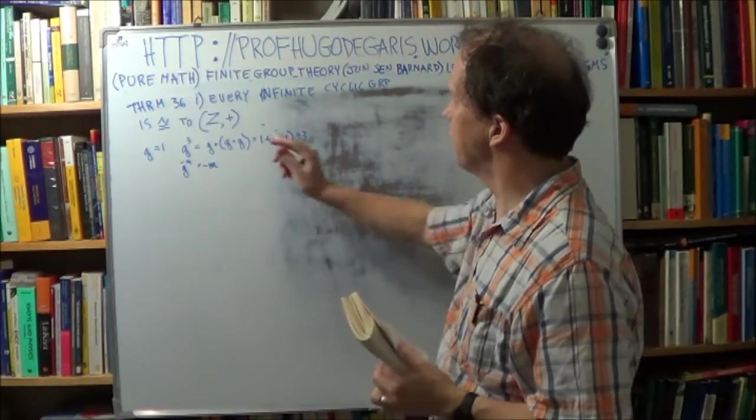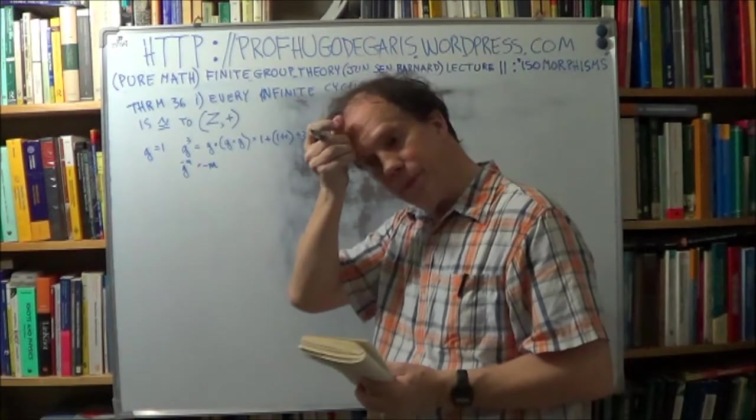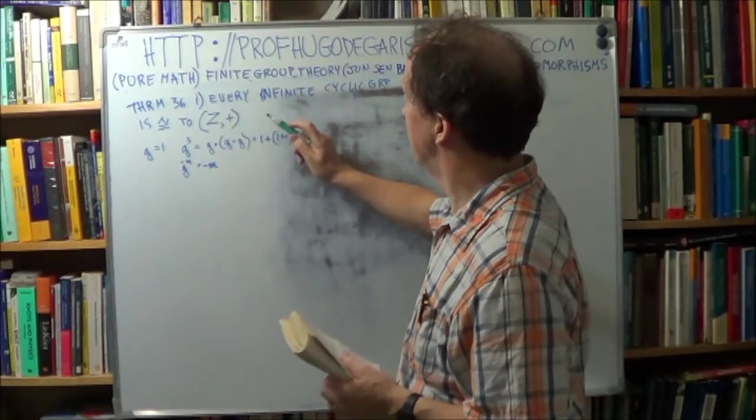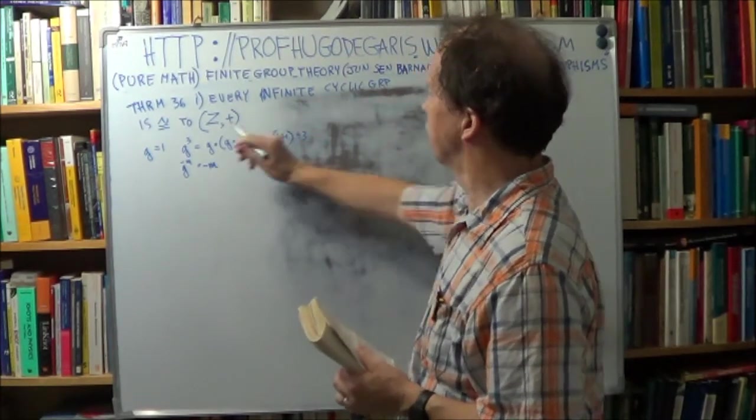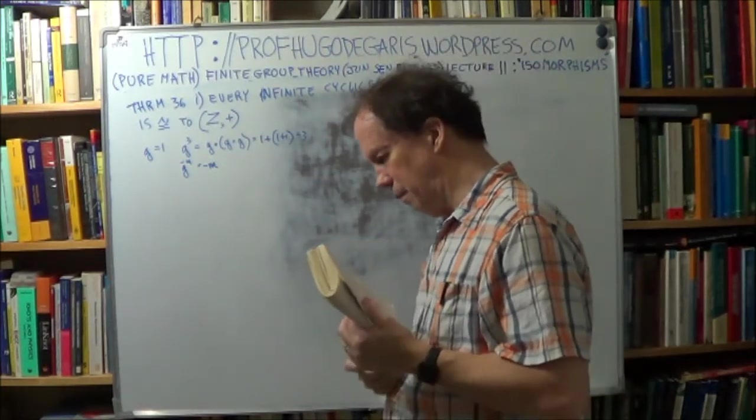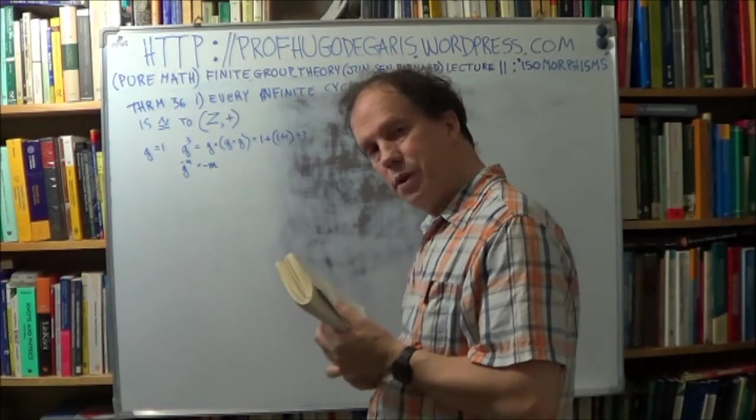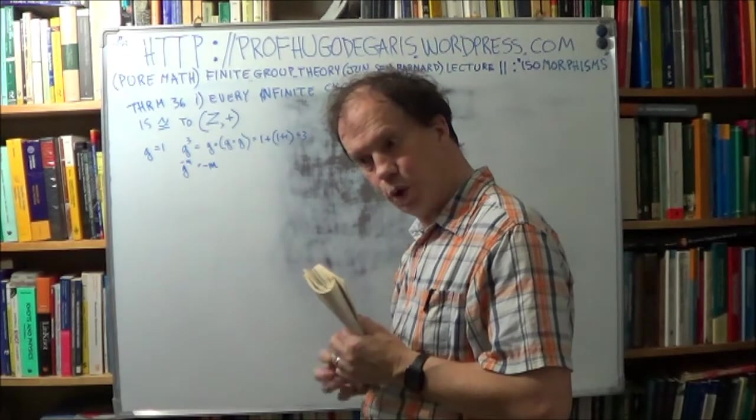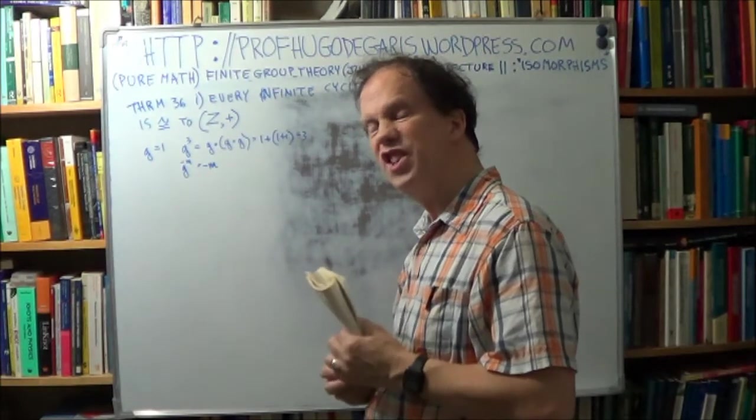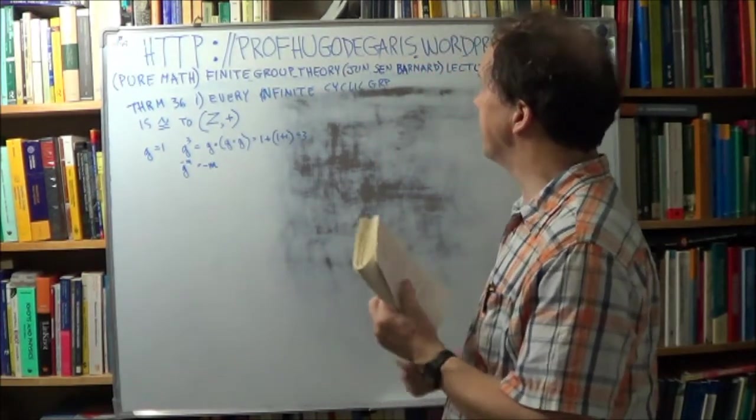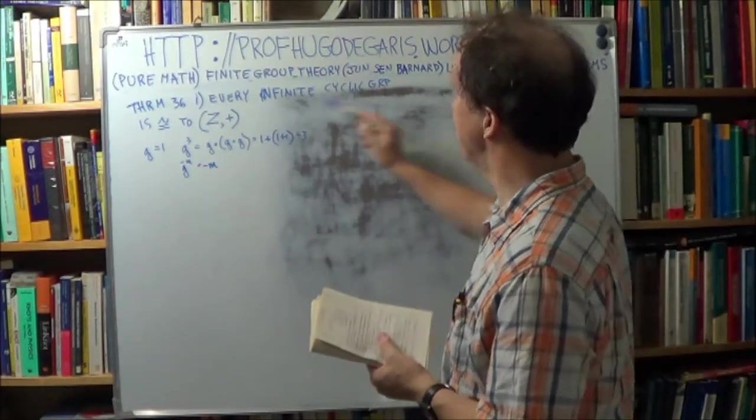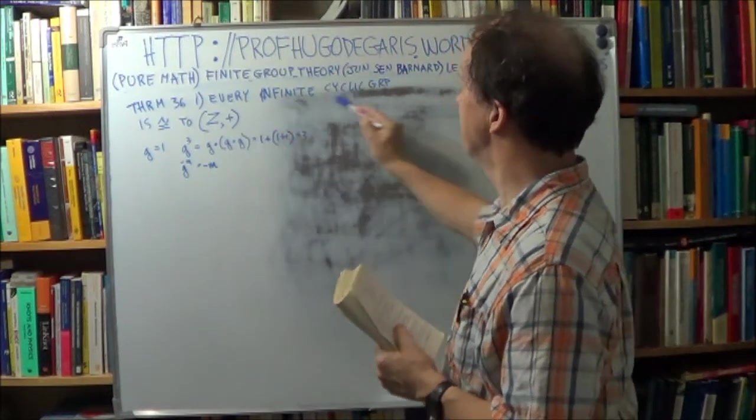Okay, so we're back to isomorphism. So we have to show that every infinite cyclic group is isomorphic to this. Now, as usual, we have to start with a choice for the mapping function. You know, what's your F? You're gonna map what into what? Well, are we going to map this into this? Or are we going to map this into this?